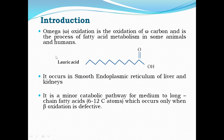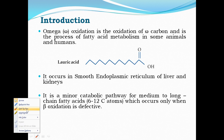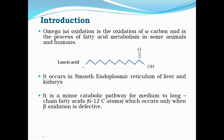Let us take the example of lauric acid to understand omega oxidation. The omega carbon is the carbon most distant from the carboxylic end. Lauric acid is a 12-carbon length fatty acid; therefore, the 12th carbon is the omega carbon, and the oxidation of this omega carbon is called omega oxidation.